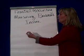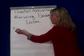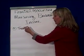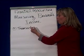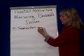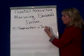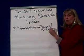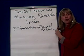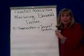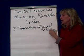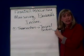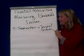The accounting cycle starts with transactions. We make journal entries to record those transactions into the journal — or if we're on a computer, this is called the transactions listing or the daily transaction listing. When we record the transactions, they're in chronological order.